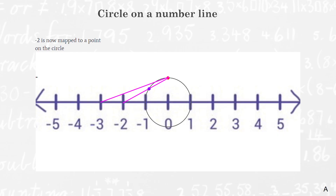Now let's say we want to map negative 3. I draw another line from the north pole to negative 3 on my number line, and I call that new intersection point negative 3. So negative 3 is now mapped to a point on the circle. If I wish to represent 5, I draw a line from the north pole to 5 on my number line — that intersection point represents 5. To represent 0, I draw a line from the north pole to 0, and it intersects the circle at the south pole — so the south pole represents 0.